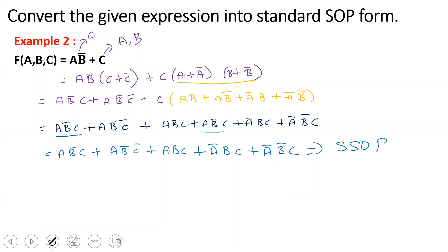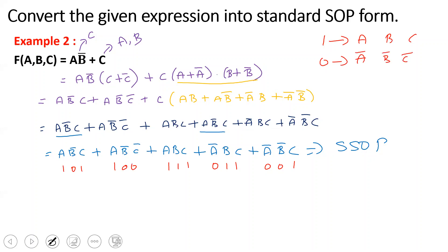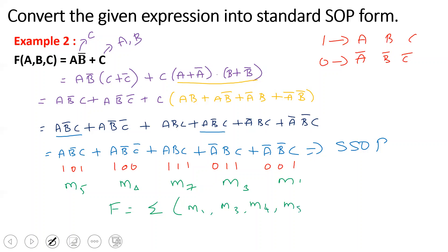Again, converting to minterm notation: AB̄C̄ → A=1, B=0, C=0 → M4. AB̄C → 1,0,1 → M5. ABC → 1,1,1 → M7. ĀBC → 0,1,1 → M3. ĀB̄C → 0,0,1 → M1. So F is equal to summation of M1, M3, M4, M5, M7.